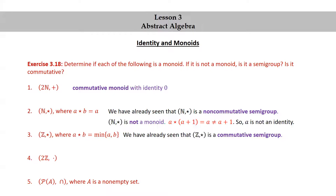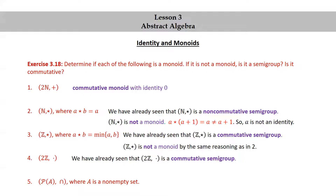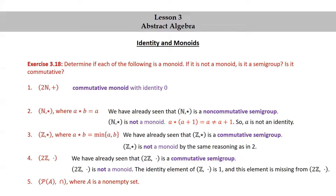For the third one, Z★ where A★B = min(A,B), we have already seen that Z★ is a commutative semigroup. Z★ is not a monoid by the same reasoning as in number 2. 2Z×, the even integers with multiplication, is a commutative semigroup, but it's not a monoid. The identity element of Z with multiplication is 1, and this element is missing from the set of even integers.